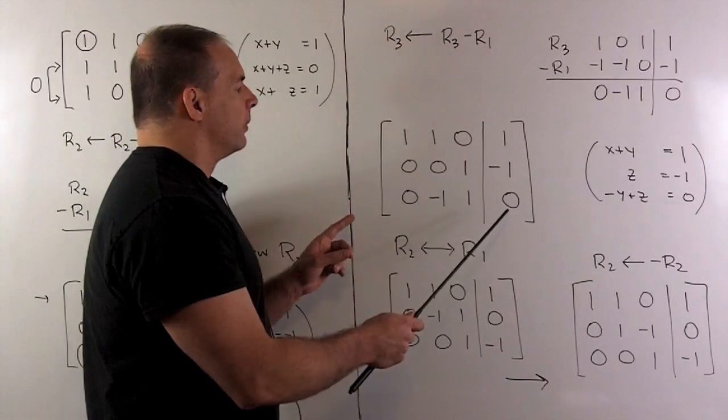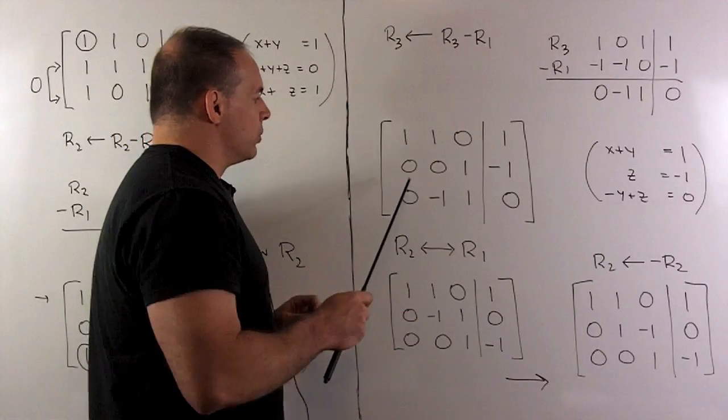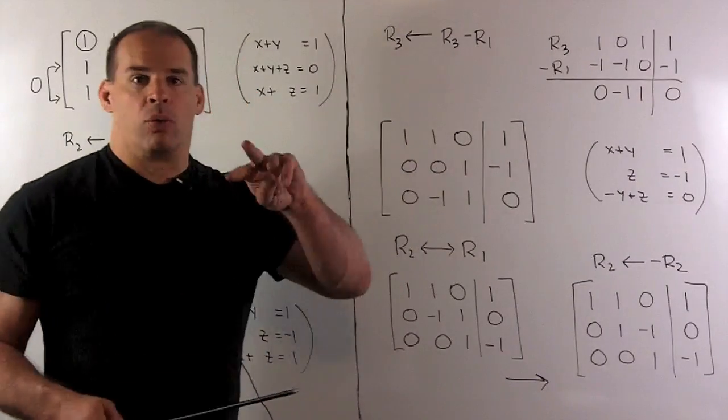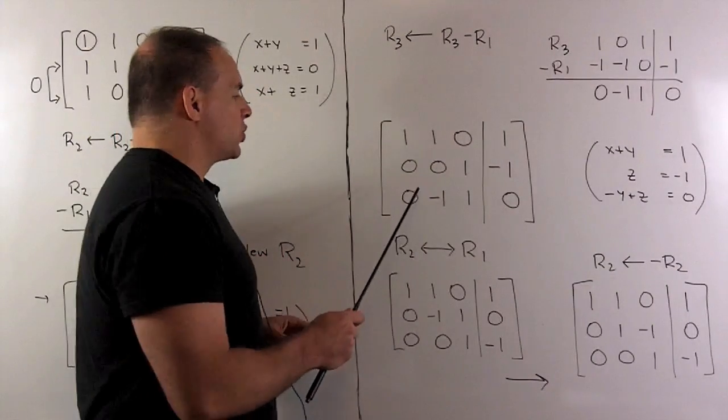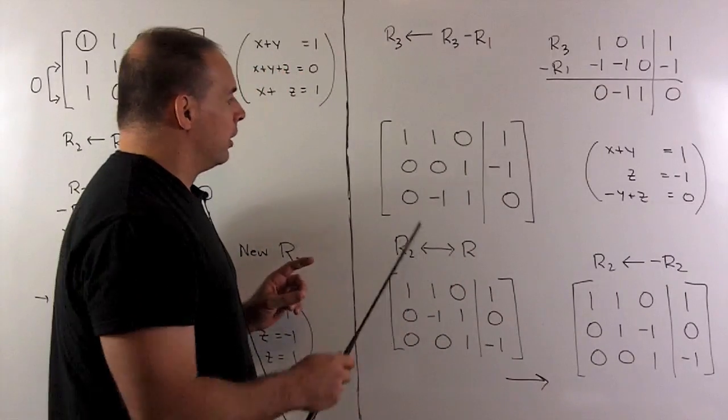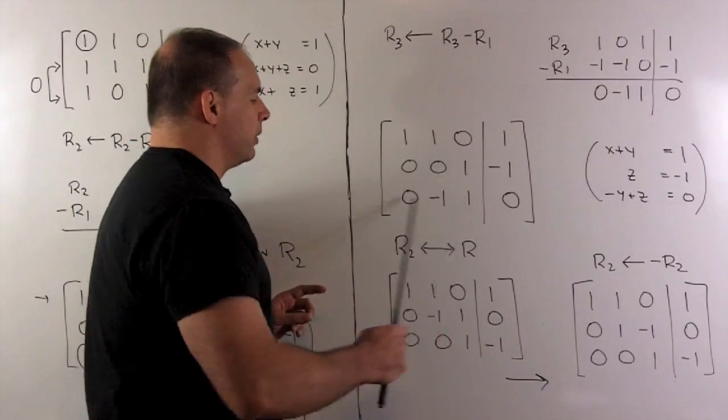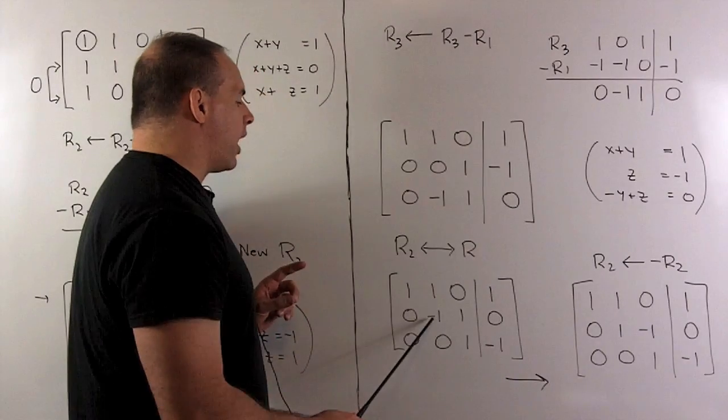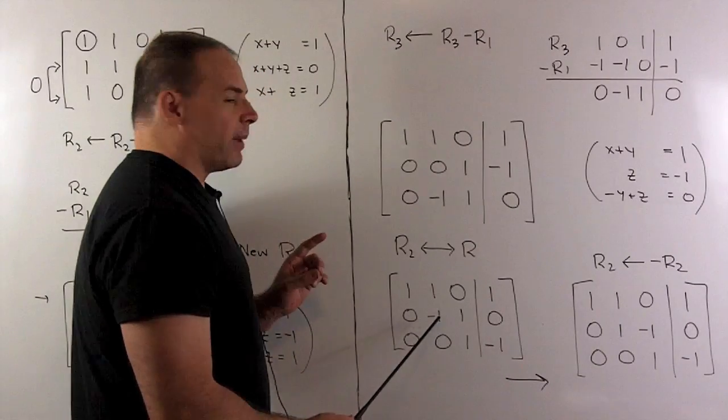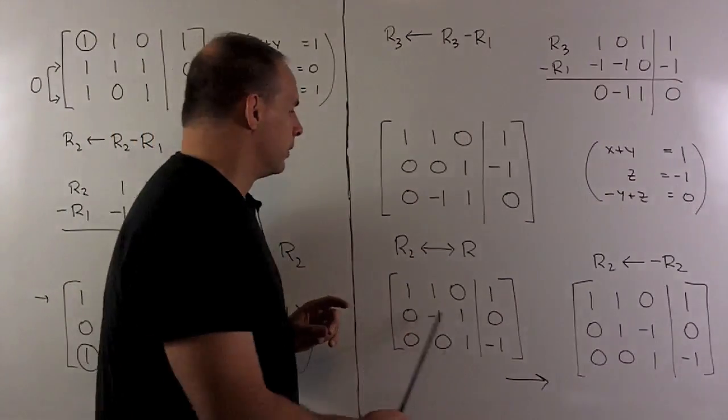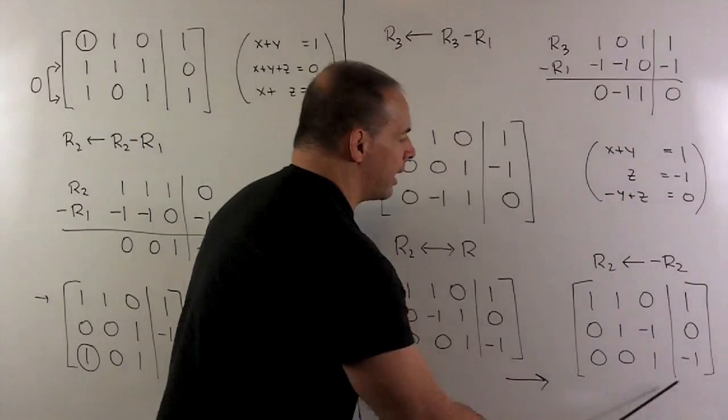Now what can we do here? Well, 1, 0, 0. I want a 1 here. I can get that by just doing a row switch. So if I switch row 2 and row 3, what are we going to have? Well, we're just taking this row and this row, switching to get here. Now I don't have a 1 there, I have a minus 1. So my next step is just going to be to multiply row 2 by a minus 1. And that gets us to this augmented matrix.